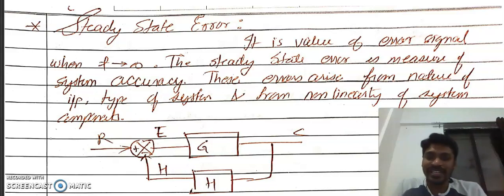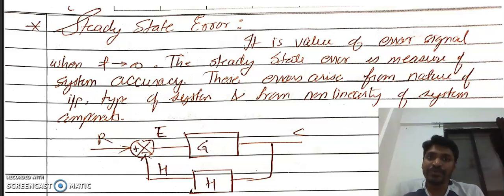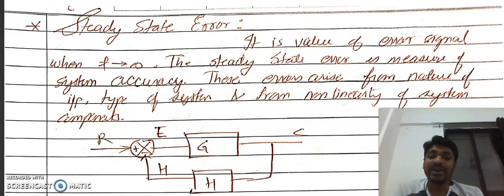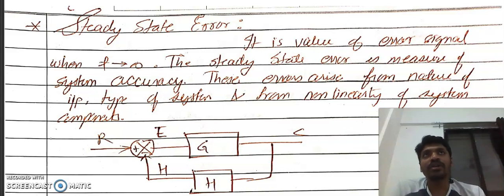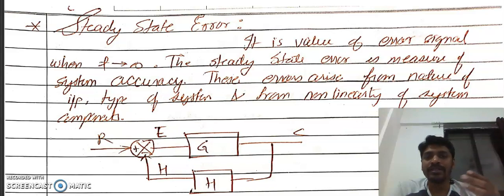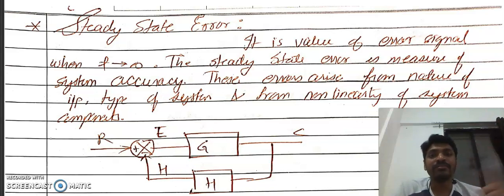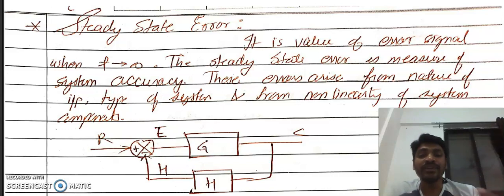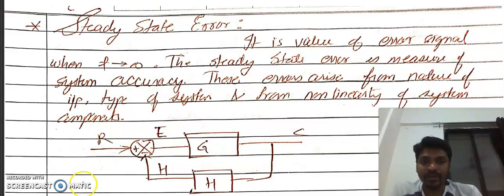Welcome. Let us start with a new topic of Unit 2 — that is steady state error. Whenever we are analyzing a system, we should always concentrate on the error of the system, or in other words, we should concentrate on how accurate the system is. Both error and accuracy go hand in hand. If a system has less error, the system is more accurate; if it has more error, the system is less accurate.